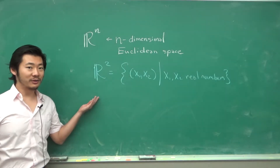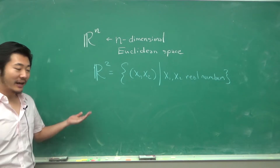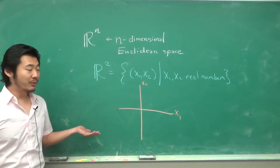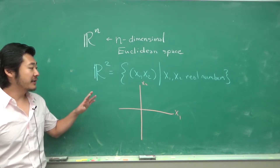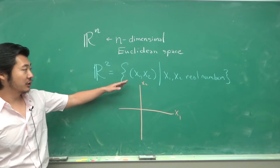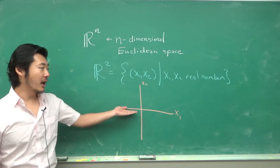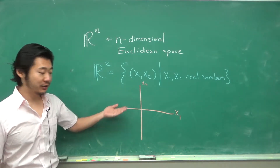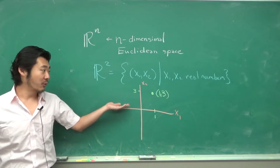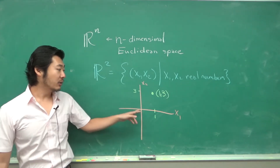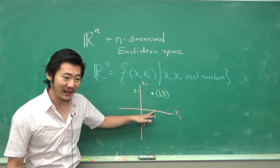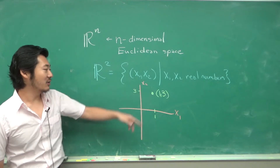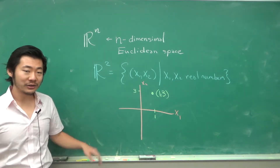R2 is a little bit easier to visualize. You would describe a typical point in R2 by how many units you go in the x1 direction and how many units you go in the x2 direction. So something like 1, 3 — you would go one unit in the x1 direction and three units up in the x2 direction.